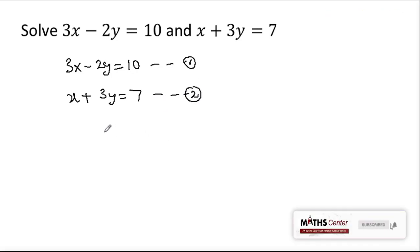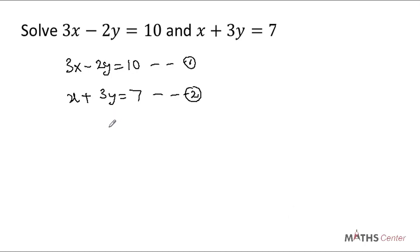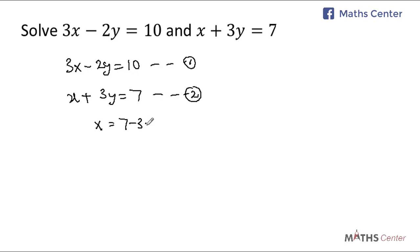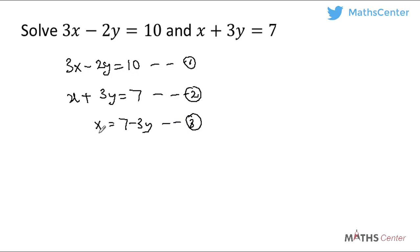I'm going to use the substitution method here. I'll make x the subject in equation 2. We can see from equation 2 we have x plus 3y is equal to 7. So if I make x the subject here I'm going to have x is equal to 7 minus 3y. This is a new equation — let's call it equation 3. I made x the subject from equation 2 and so I will substitute x into equation 1.